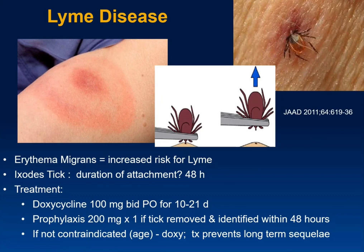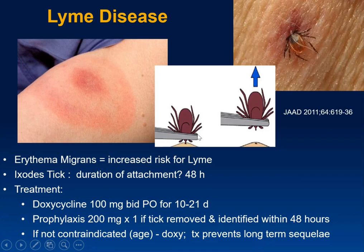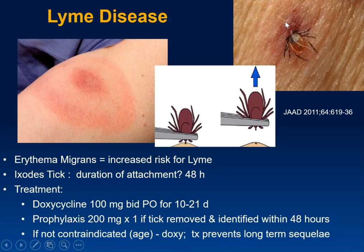If the tick has been attached for more than 48 hours, there is risk of disease transmission. If less than 24 hours, you likely don't need to do anything — just monitor the area. When a tick is still embedded, the best approach is to use tweezers or mosquito forceps as close to the mouthpart (proboscis) as possible and pull it out. Do not squeeze the abdomen — you don't want gastric contents or spirochetes entering the body.